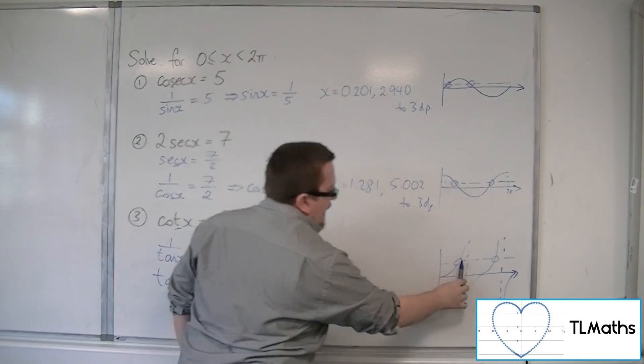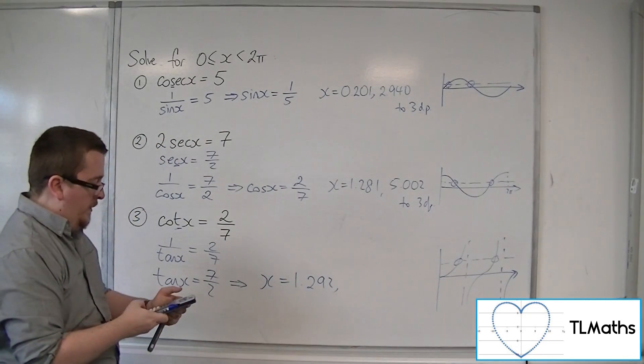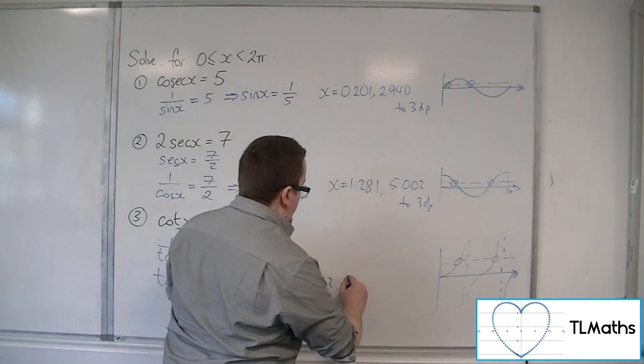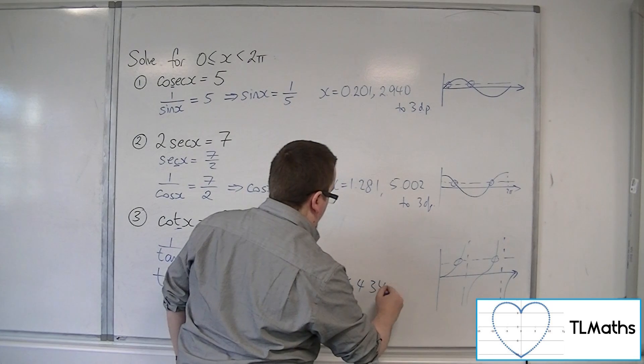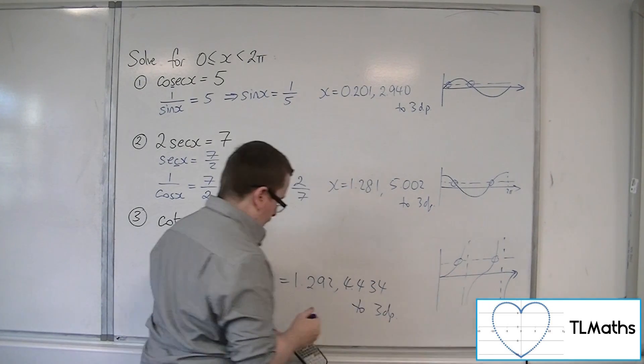And then we can add π to get the second solution. So 4.434.